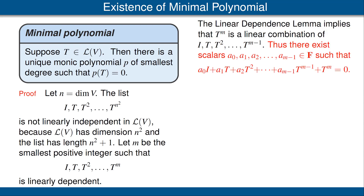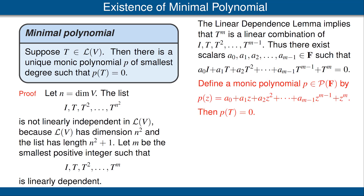Thus, there exist scalars a₀ up to a_{m−1} such that the following equation is true. Notice that the coefficient of T to the m here is equal to 1. Now use these numbers, a₀ up to a_{m−1}, to define a monic polynomial as shown. By our construction, p of T is equal to 0.